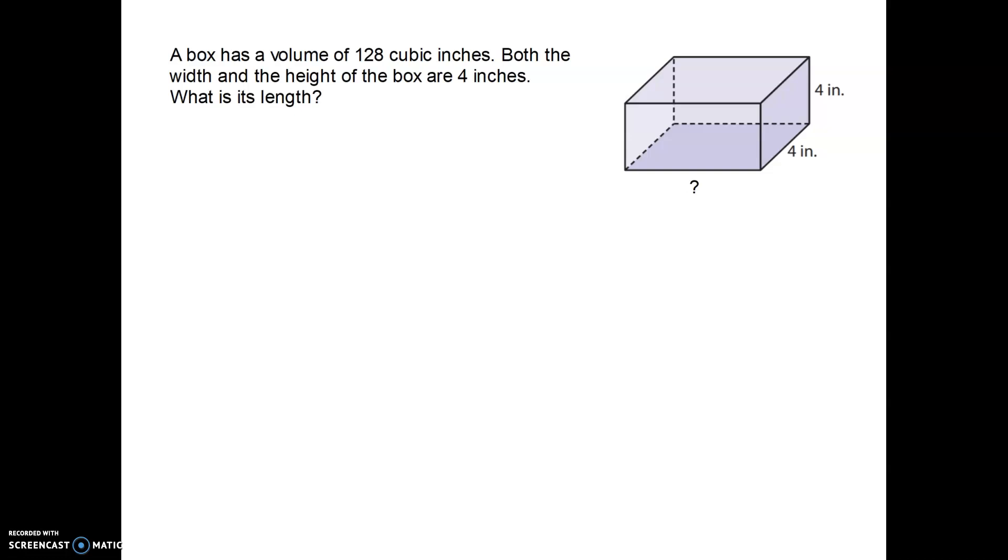Let's look at this first example. It says a box has a volume of 128 cubic inches. Both the width and the height of the box are 4 inches. What is its length? This is nice because they give us a visual to look at. And even if they didn't give us a picture, I would recommend drawing one. That always helps me just to see what I've got. The first thing I would do is write the formula for volume of a rectangular prism. I know that volume equals length times width times height.